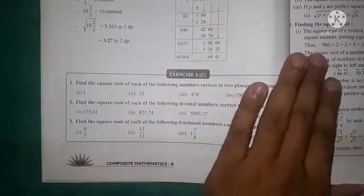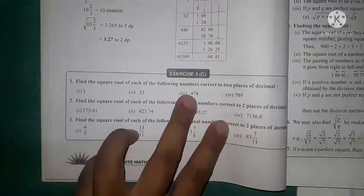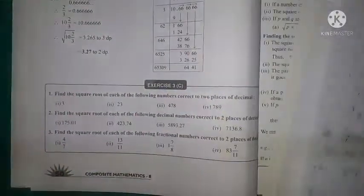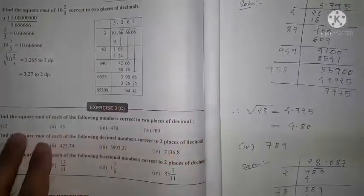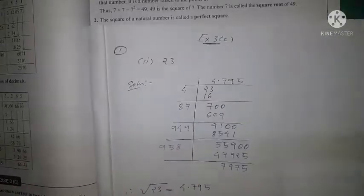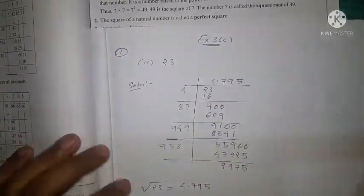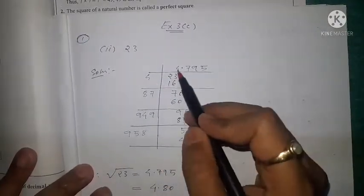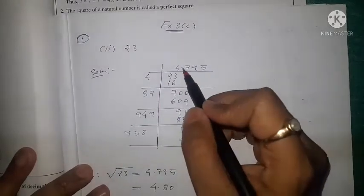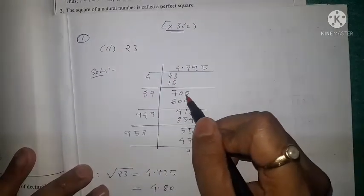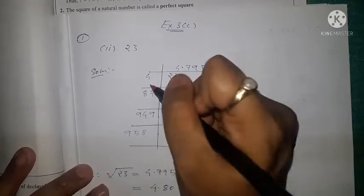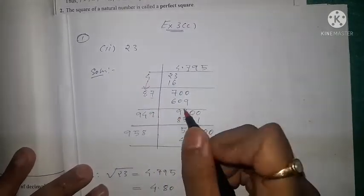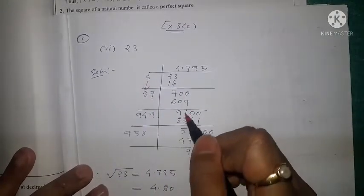Exercise 3c: find the square root of each of the following numbers correct to two places of decimal. We'll do Roman numeral II — find the square root of 23. Four fours are 16, so 7 comes down. We place the decimal and take two zeros, so it becomes 700. The 4 is doubled to 8, and 87 × 7 = 609, so the remainder is 91.